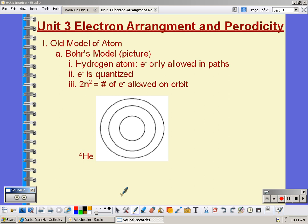What he said was that the electrons were only allowed on these paths, and he called these paths orbits. He also said that the electron was quantized on these orbits. In other words, the electron has fixed energies.